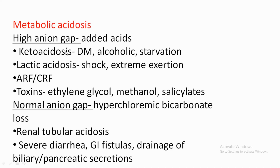High Anion Gap causes include ketoacidosis — such as Diabetic Ketoacidosis, alcoholism, and prolonged starvation — as well as Lactic Acidosis from shock or extreme exertion. High Anion Gap Metabolic Acidosis also occurs in acute and chronic renal failure.